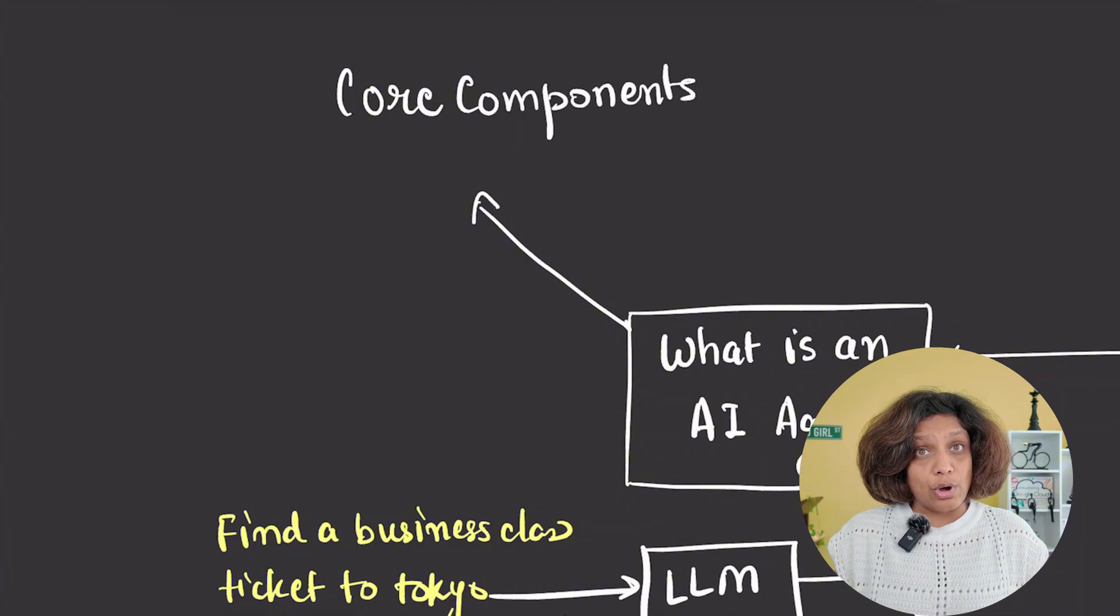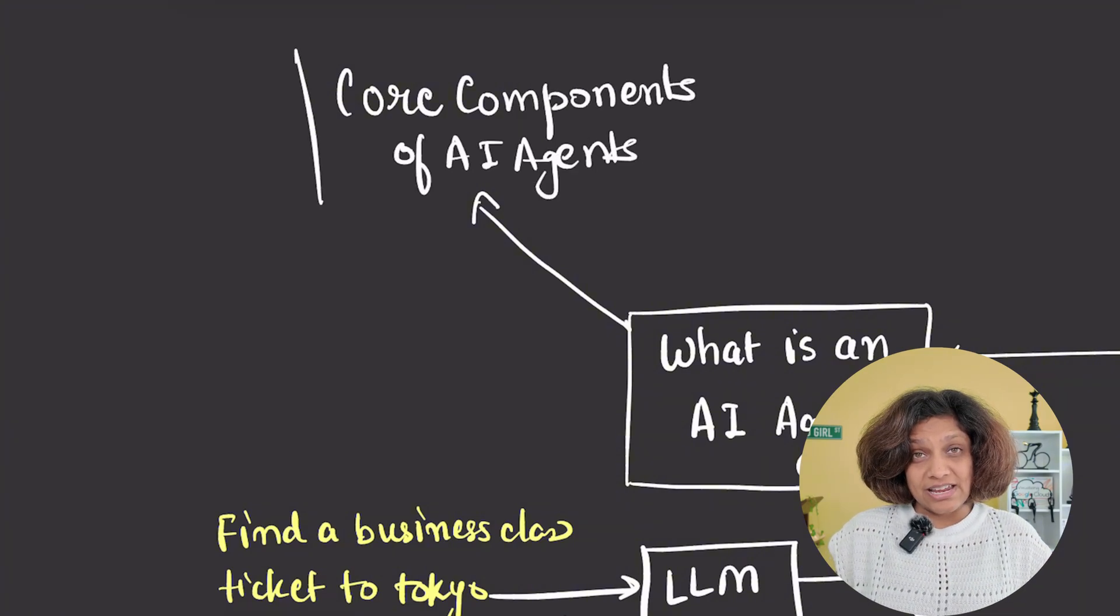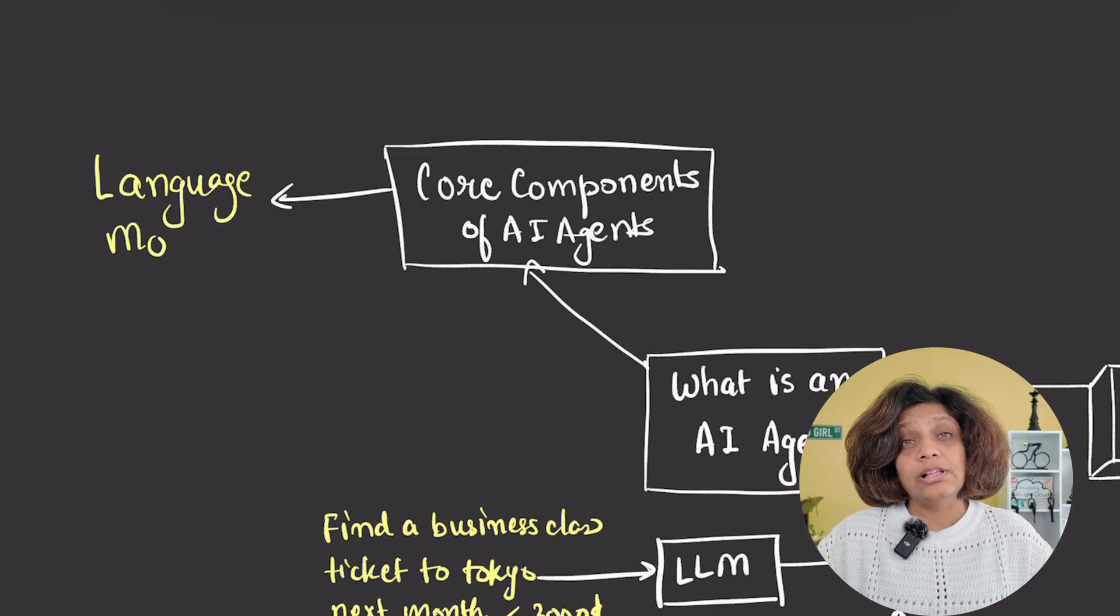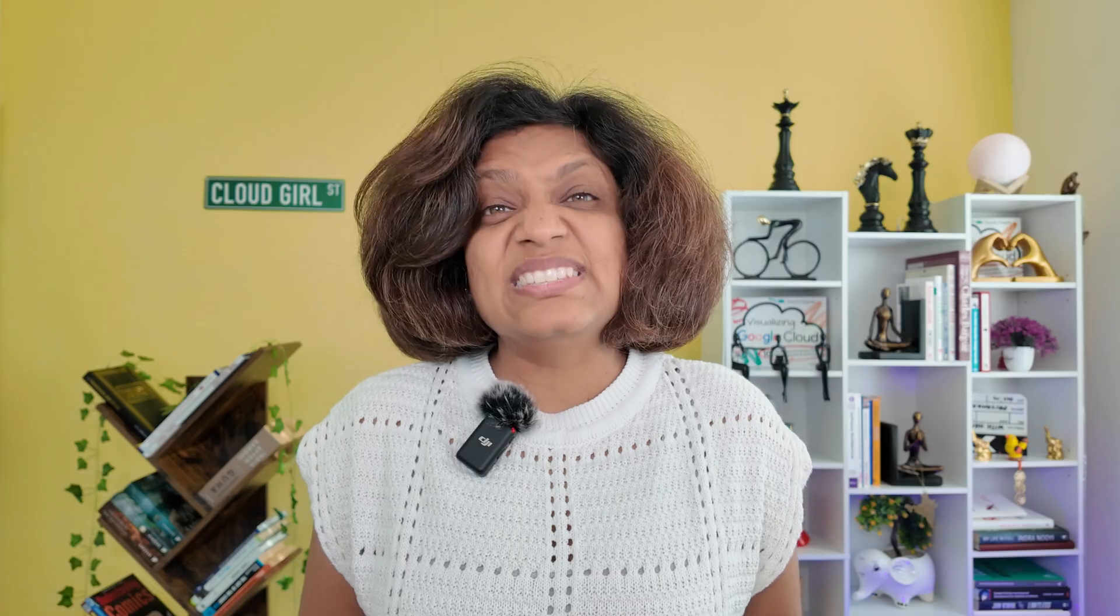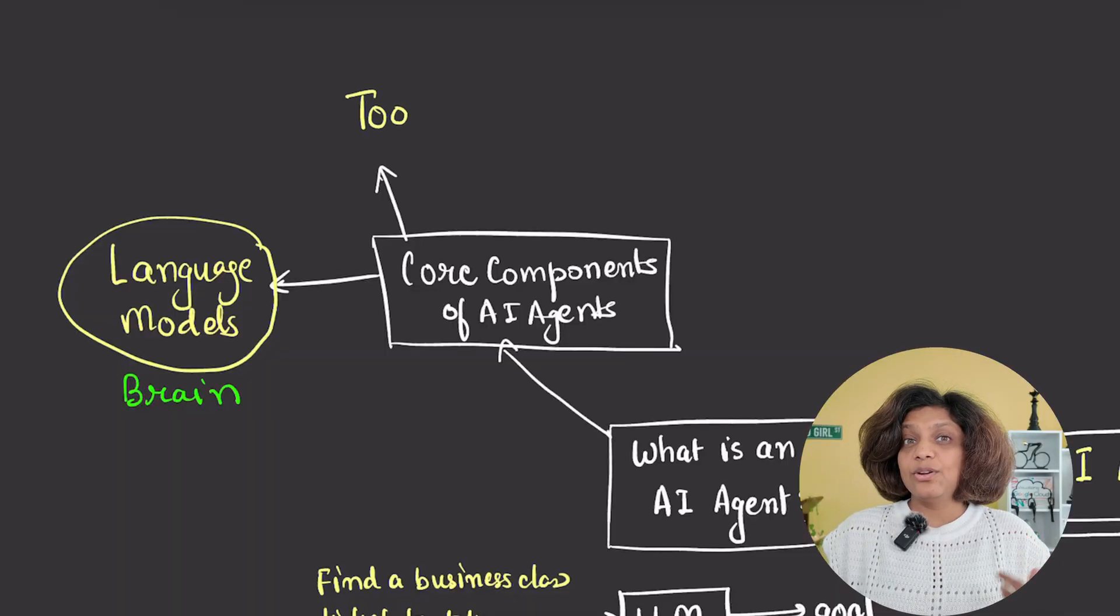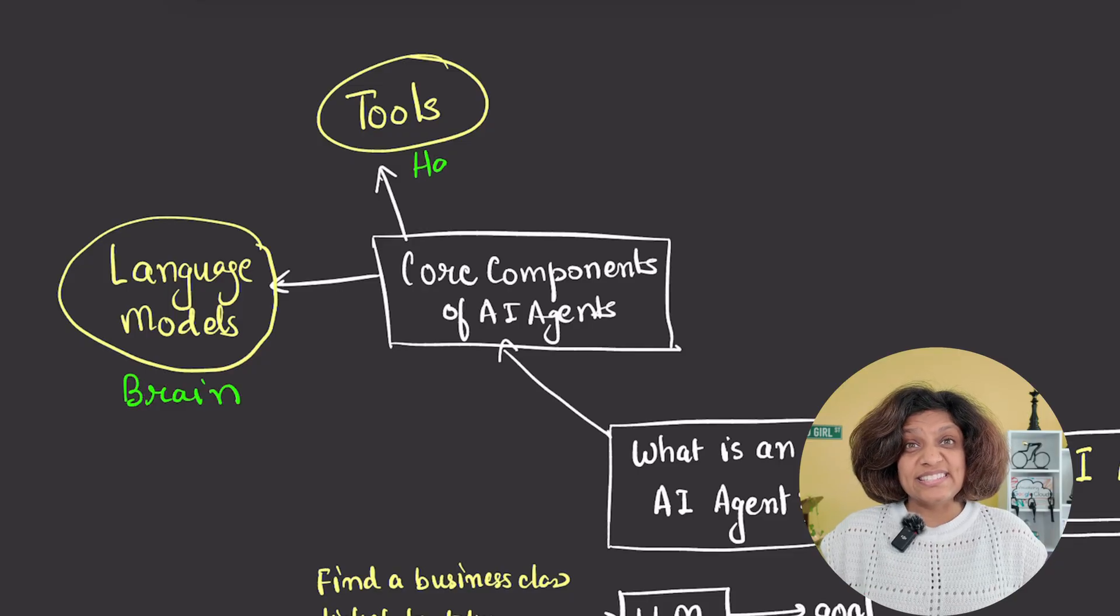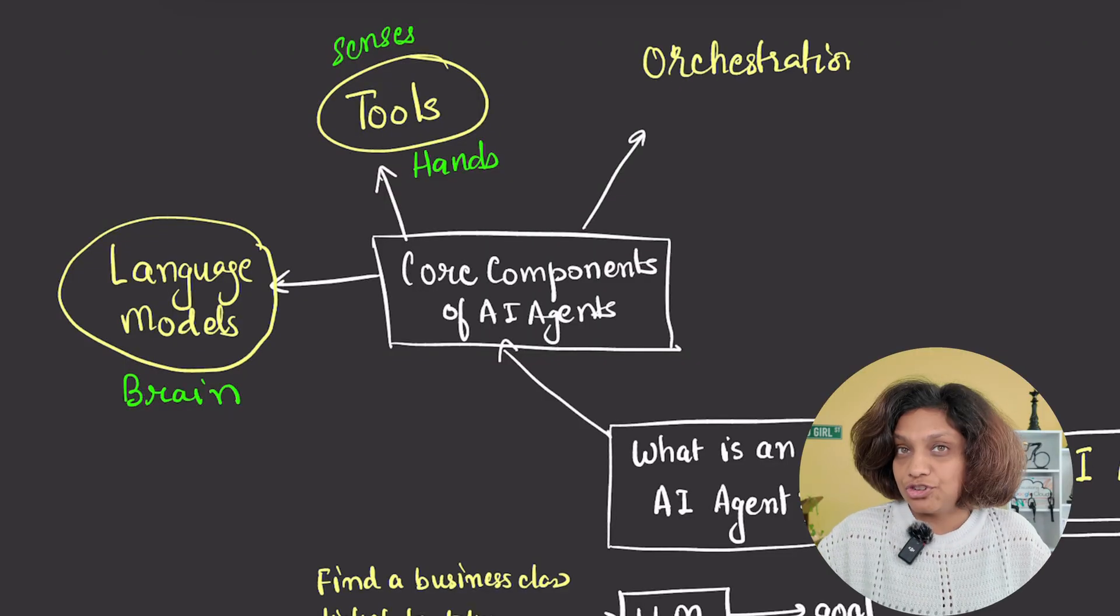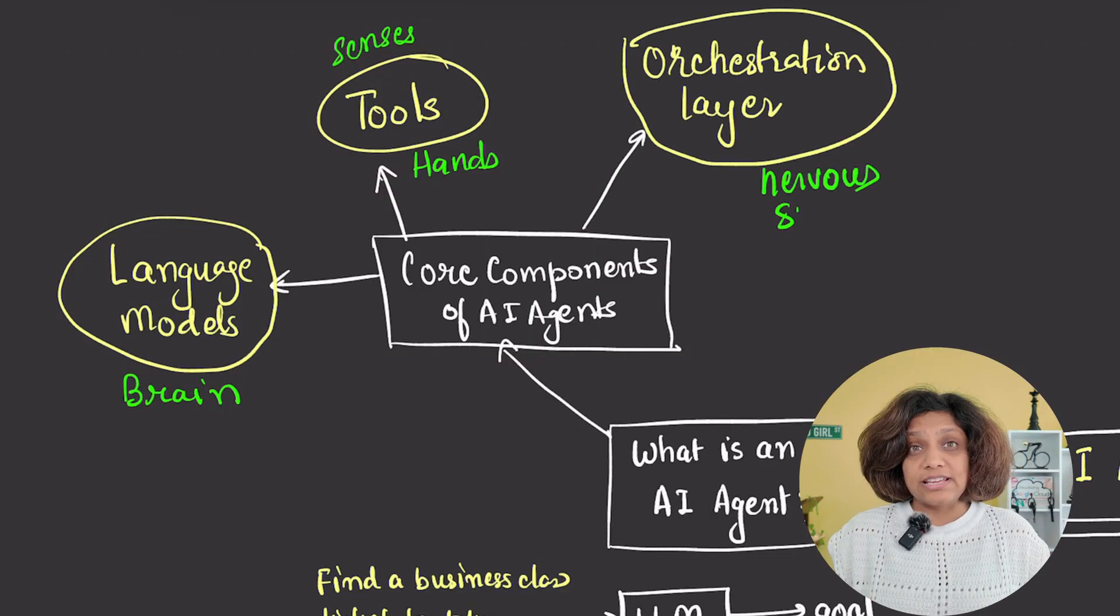Every AI agent has four core components that you need to understand. The first one is the language model. Language model is the brain. It's the reasoning and decision-making engine that powers everything. The second one is the tools. These are the hands and the senses. They allow the agent to interact with external systems like the APIs, the databases, and the services. Third is the orchestration layer. This is the central nervous system. It governs how the agent processes information, plans its actions, and executes them to achieve the goal.